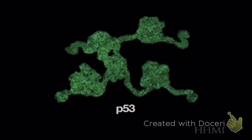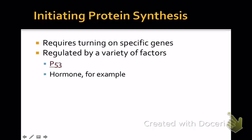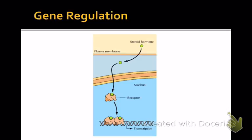p53 is a protein. That protein had to be made by its own gene being turned on, transcribed, and translated. So you need proteins to turn on genes to make more proteins — you can see how quickly it gets complicated. p53 is particularly important because it's involved in cancers, including leukemia. We've learned a great deal about gene regulation by studying those cancers.